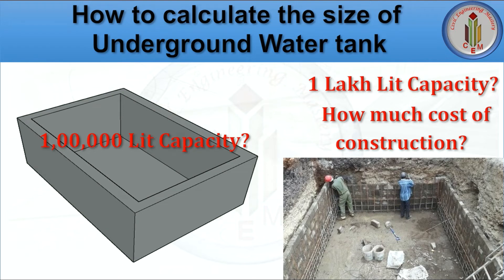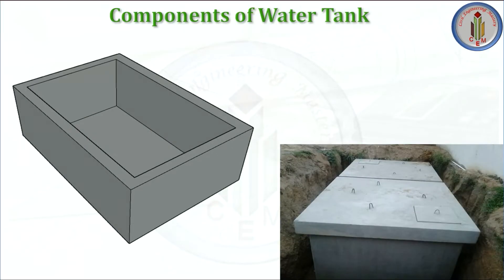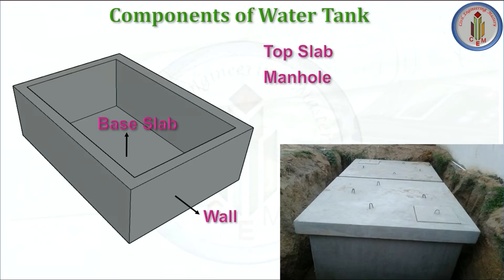Hello friends, welcome back to Civil Engineering Mastery. In this video, let's see how we calculate the size of an underground water tank for a capacity of 1 lakh liters, and also the cost of construction. Before starting the calculation, let's see what are all the components of a water tank: base slab, side wall, top slab, manhole, vent, and drain pipe.